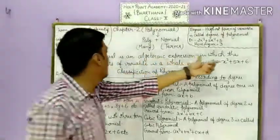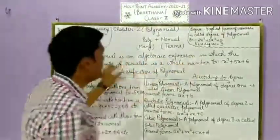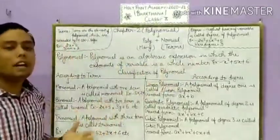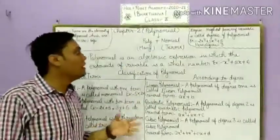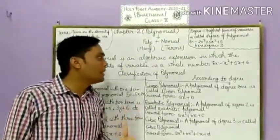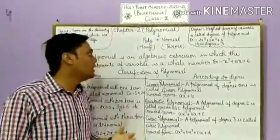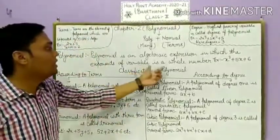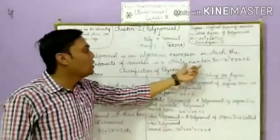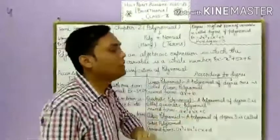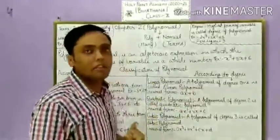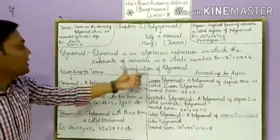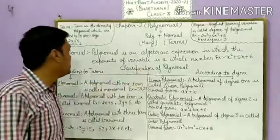Polynomial is an algebraic expression in which the exponent of a variable is a whole number. We have algebraic expressions here, but the exponent of a variable must be a whole number — a negative number is not classified as a polynomial.